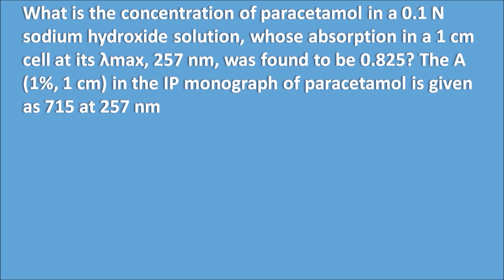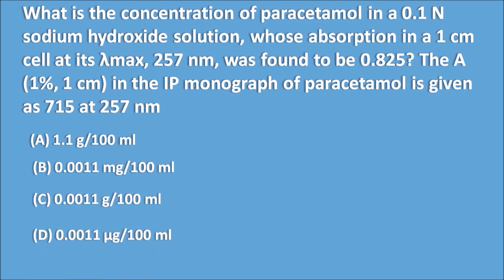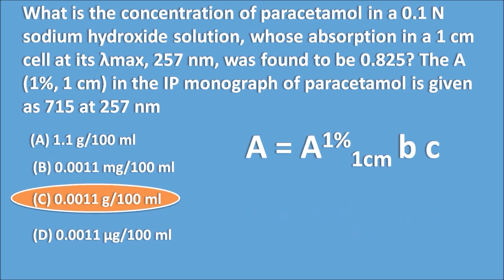What is the concentration of parasympathic in a 0.1 N sodium hydroxide solution whose absorbance in a 1 cm cell at lambda max 257 nm was 0.825? The A1%1cm in the IP monograph is given as 715 at 257 nm. Options are: 1.1 g/100 ml, 0.0011 mg/100 ml, 0.0011 g/100 ml, or 0.0011 µg/100 ml. Using the equation A = A1%1cm × B × C, you solve for C and get 0.0011 g/100 ml.